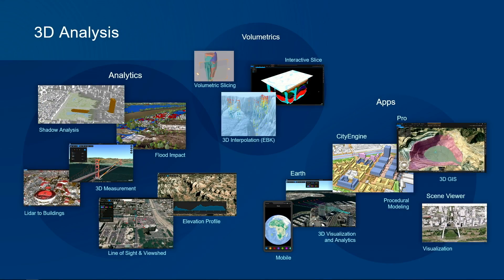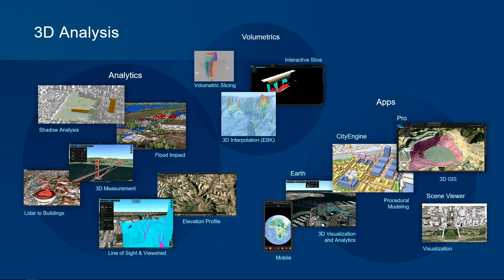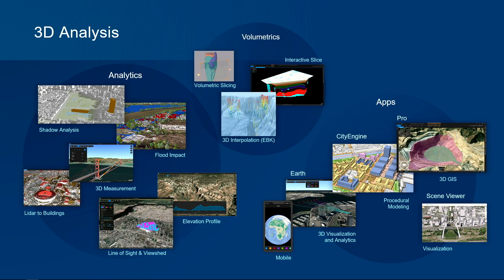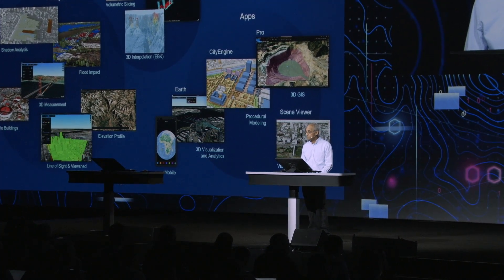3D analysis includes GPU-based visual analytics and exploratory tools like line of sight, viewsheds, as well as interactive slicing of 3D models and additional interactive tools. These 3D capabilities for visualization and analytics are available across many apps like ArcGIS Pro, ArcGIS Earth, CityEngine, and the Scene Viewer, and they're also available to developers building apps.